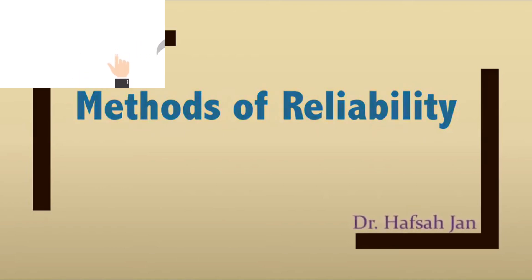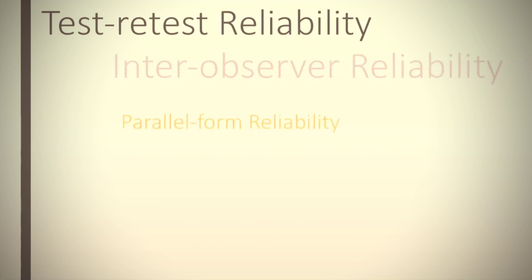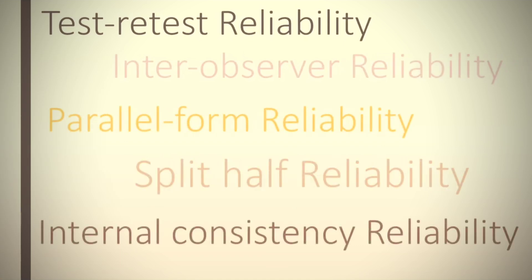The methods — or types — of reliability involve examining the reliability coefficient of standardized tests. The American Psychological Association (APA) has introduced several methods of estimating reliability. All methods involve correlating two sets of scores obtained either from the same assessment procedure or from equivalent forms. The main methods are: test-retest reliability, inter-rater reliability, parallel forms reliability, split-half reliability, Kuder-Richardson reliability, and internal consistency. The coefficient from each method must be interpreted according to the type of consistency being investigated.